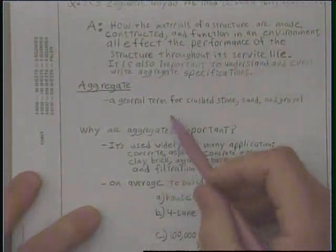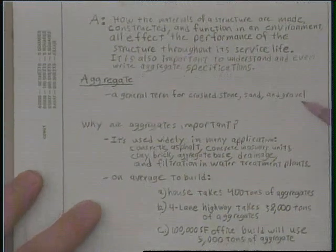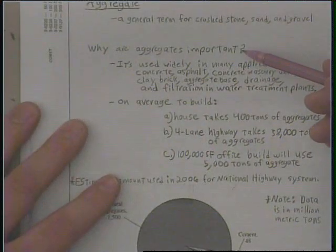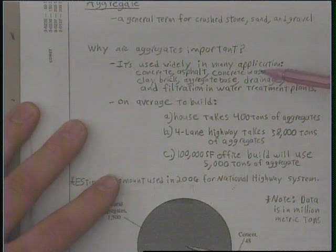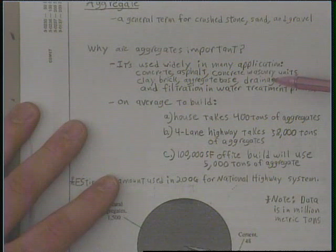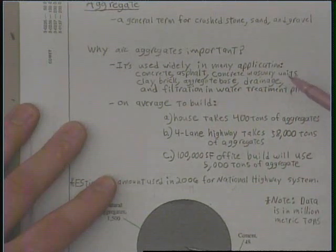Aggregates is just a general term for crushed stone, sand, and gravel. They're used in quite a few different construction applications — anything from concrete, asphalt, CMU units, clay brick, aggregate base for pavements, drainage behind retaining walls, and even filtering water in water treatment plants. On average, it takes about 400 tons of aggregates to build a house, almost 40,000 tons for a four-lane highway, and about 5,000 tons for a 100,000-square-foot office building.